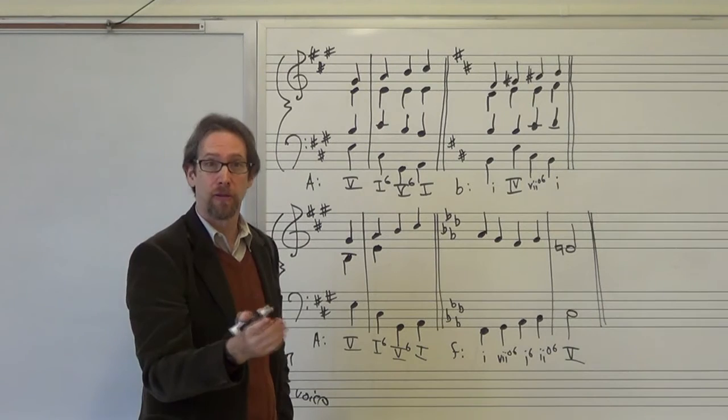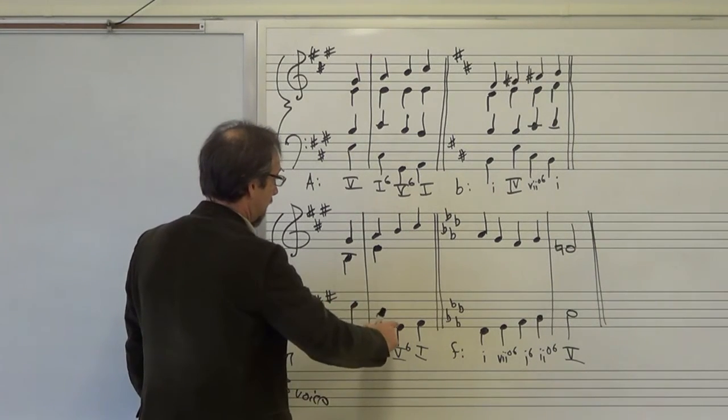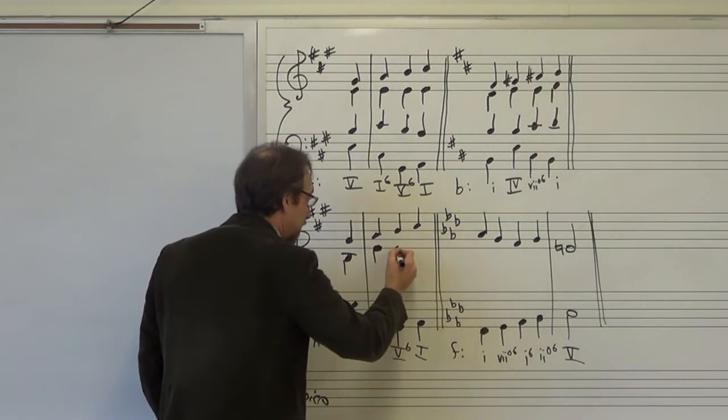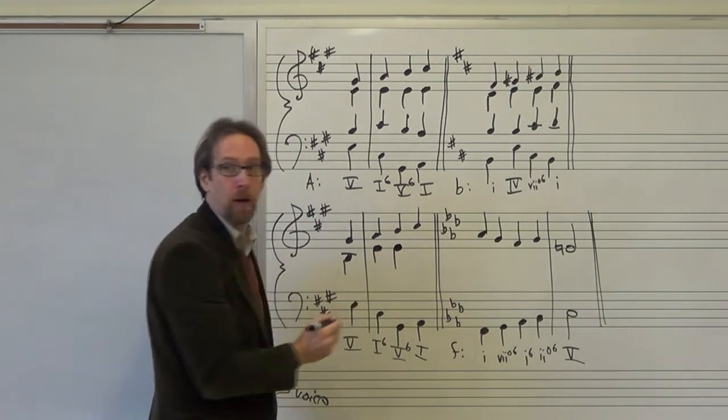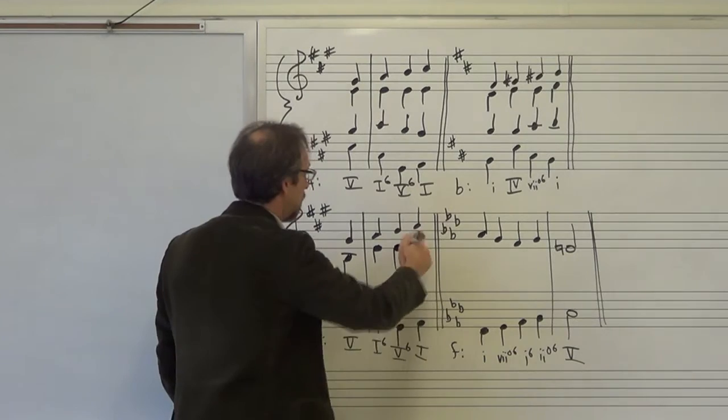And this is a sixth moving to a fourth, so it's not a parallel fifth or a parallel octave or anything that's going to be problematic. That said, I don't want to leap again right away. G sharp, B, I need an E. Well, see how convenient that is. I don't need to leap at all. I can just maintain that as a common tone. And then here, A, C sharp, I need an E.